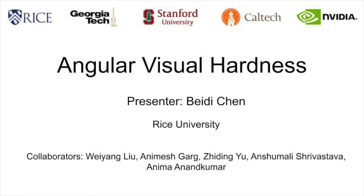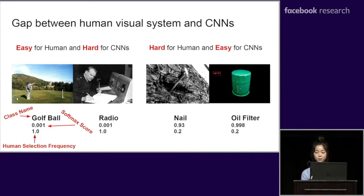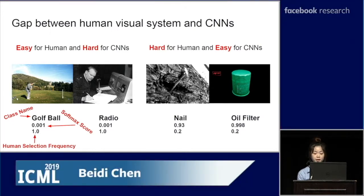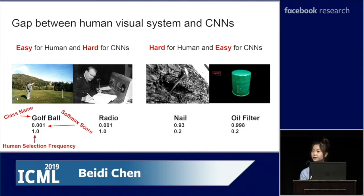Let's start from some motivating examples to discuss the gap between human visual perception and CNN. From the left side images, we can observe images that are easy for humans to recognize but hard for CNNs. These images have relatively rich context, but the salient part is still the object of interest. Right hand side images are hard to recognize for humans but easy for CNNs.